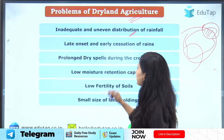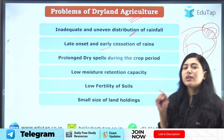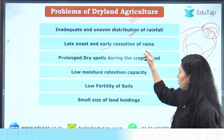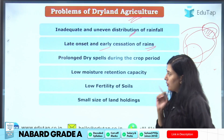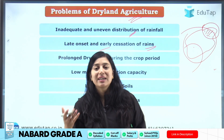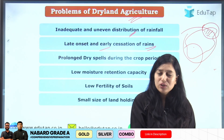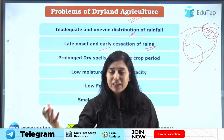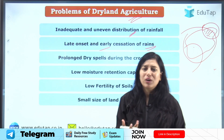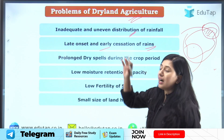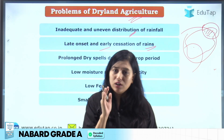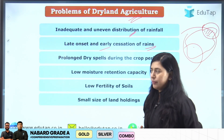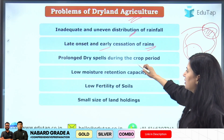The next problem is late onset and early cessation of rain. Rain can either come late or withdraw early. If rainfall is late — for example, kharif sowing happens in June-July — and the rain doesn't arrive on time, germination will be impacted. If rains stop early, there will not be enough moisture for the later developmental stages of the crop, which creates a problem.